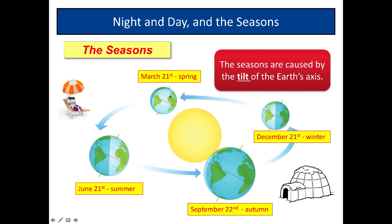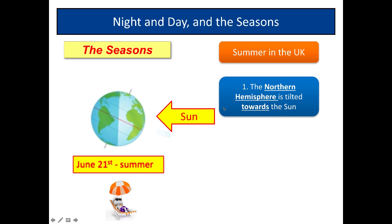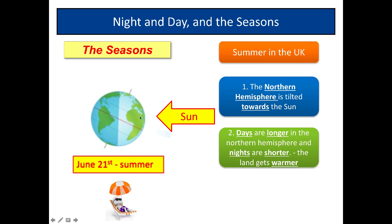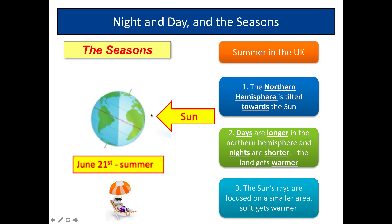So what is it about the tilt that causes the seasons? In summer in the UK, the Northern Hemisphere — that's the bit north of the equator — is tilted towards the Sun. Days are longer in the Northern Hemisphere and nights are shorter. It got light at about 6 o'clock this morning and it'll get dark about 8pm tonight. The land gets warmer because it's exposed to the Sun for longer, and the Sun's rays are more focused on a smaller area, so it gets warmer as we move towards summer on June 21st.